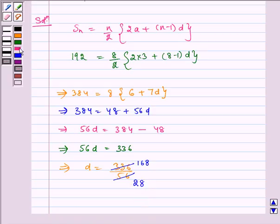Now again it gets cancelled by 2, so we get here 84 and similarly here we get 14.